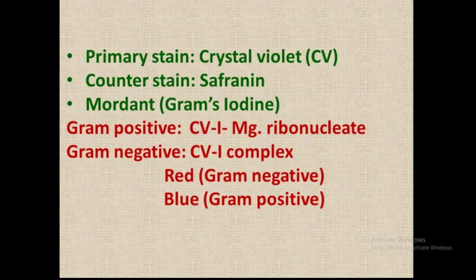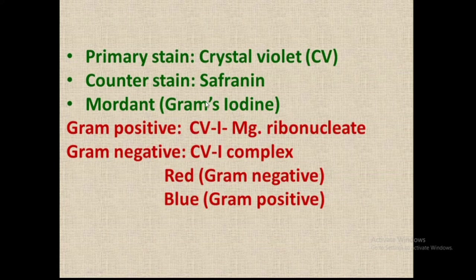In gram staining, we differentiate gram positive and gram negative bacteria. The primary stain used is crystal violet — a basic stain. The counter stain used is safranine, also a basic stain. A mordant — gram's iodine — is also used. The mordant is not a stain; it is a substance that forms an insoluble compound with the stain (crystal violet), which helps fix the color to the bacterial cell wall.